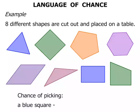What's the chance of picking a blue square? Hmm, I can't really see any blue squares. Can you? Well, no, you can't. So in this case, it is impossible.